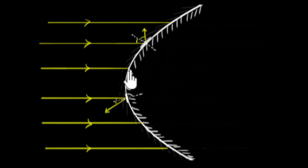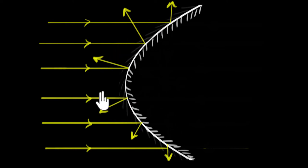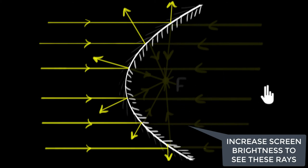I highly encourage you to first try it yourself — do it at all places. If you've done it, let me show you what it looks like everywhere. This is what it looks like. If you notice, you can see that after reflection, the rays of light are no longer parallel — they're all going away from each other. This means a convex mirror diverges rays of light after reflection. That's the property of a convex mirror. In contrast, a concave mirror converges a beam of light to a single point, but a convex mirror diverges a beam of light.